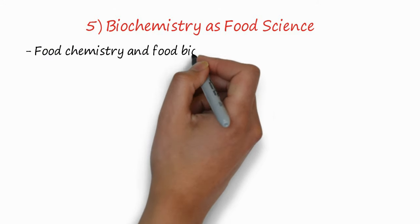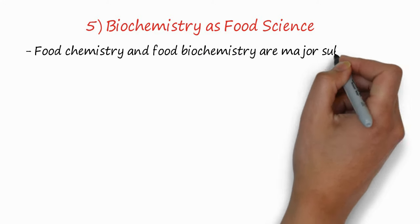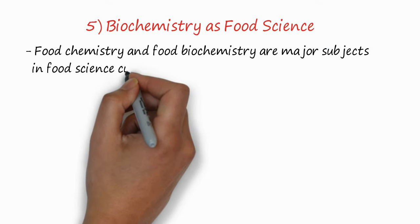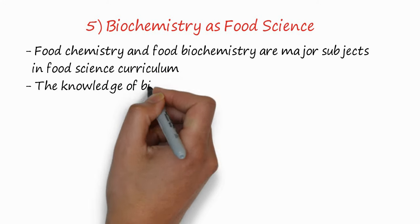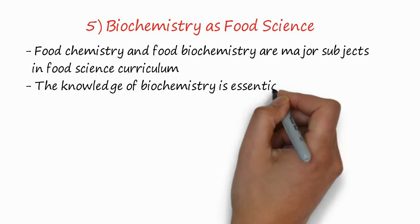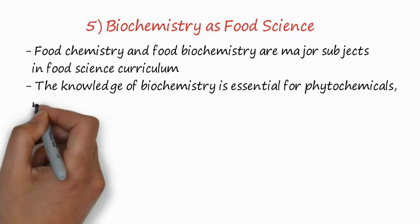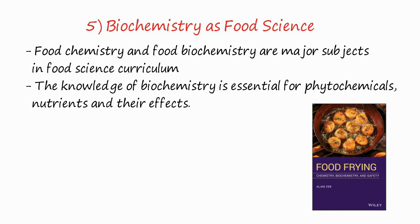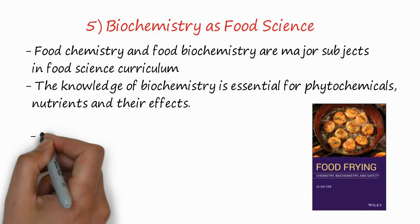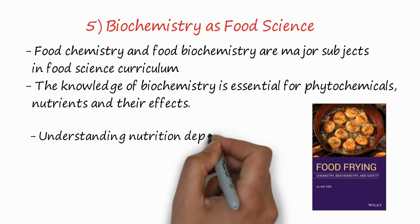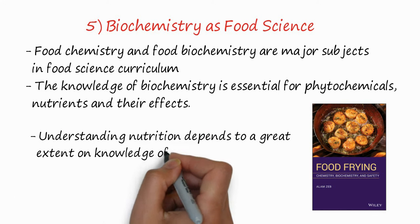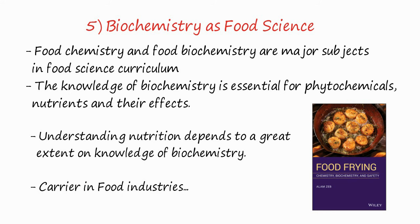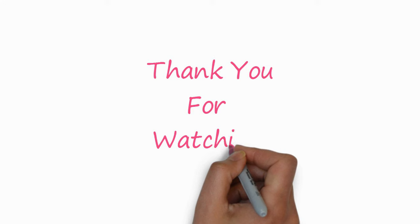The fifth application and scope is biochemistry as a food science. Food biochemistry and food chemistry are two major subjects in the food science curriculum throughout the world. The knowledge of biochemistry is essential for phytochemicals, nutrients, and their effects on the human or animal body. You can see my book 'Food Frying: Chemistry, Biochemistry and Safety,' published by John Wiley and Sons, UK, in 2019. Understanding nutrition depends to a great extent on the knowledge of biochemistry, so if you are a biochemist, you will have a future in food science too.